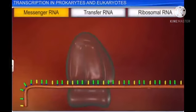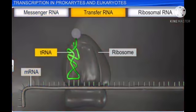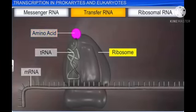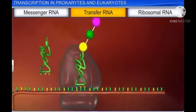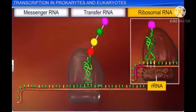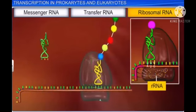The mRNA carries the coding information to the sites of protein synthesis and helps to put together amino acids to make protein. The tRNA carries each amino acid to the ribosome according to the coded message in the mRNA, while the rRNA provides a mechanism to decode mRNA into amino acids.